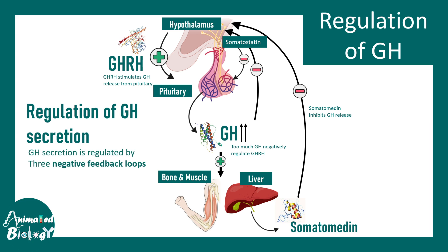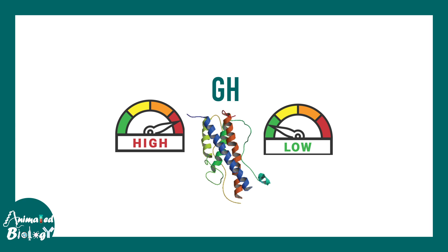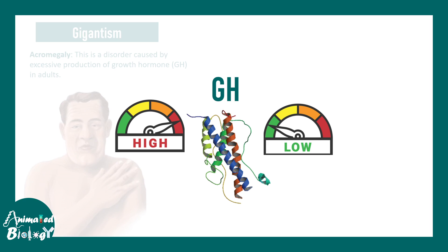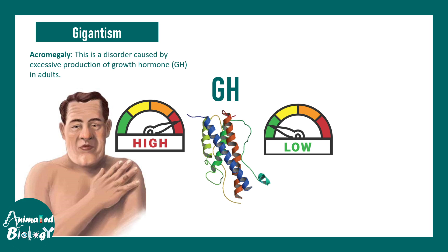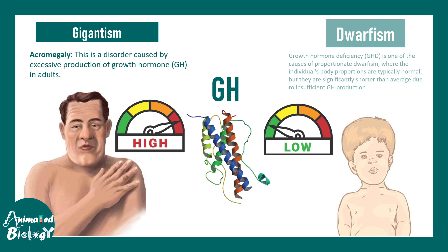Too much GH leads to gigantism or acromegaly depending on when it is elevated, while too little GH can lead to dwarfism. Therefore, a balanced level of GH is critically important.